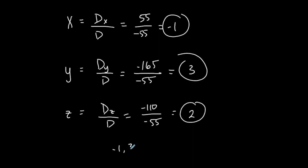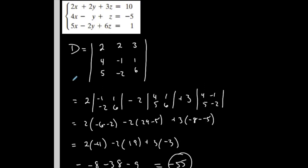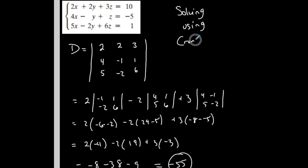So the solution is the ordered triple (negative 1, 3, 2). This is Cramer's Rule — obviously just one way to solve a system of equations. This method would be faster with a system of 2 instead of 3 variables. But it can be faster depending on the situation, especially if you're using a computer program or already need determinants for something else. It works for 2, 3, 4, or 5 variables — it doesn't matter.